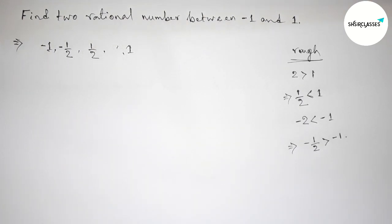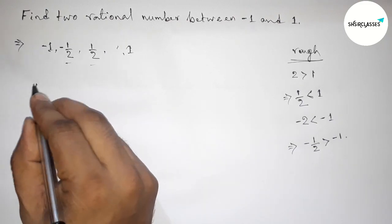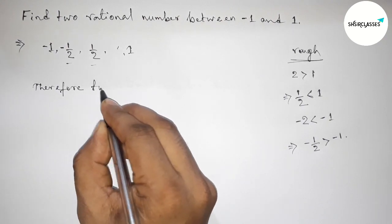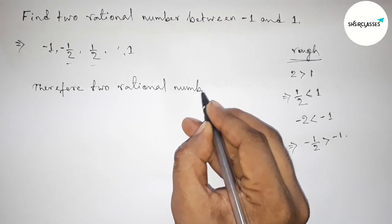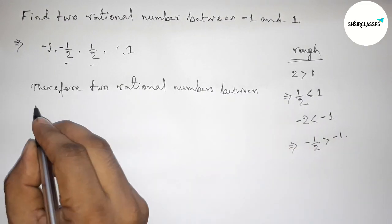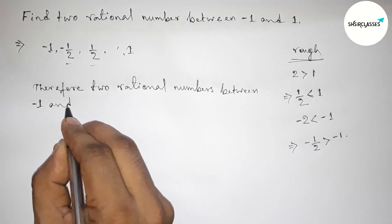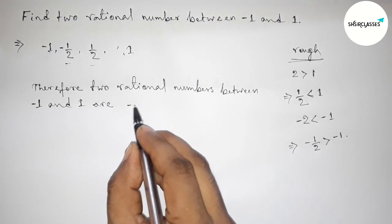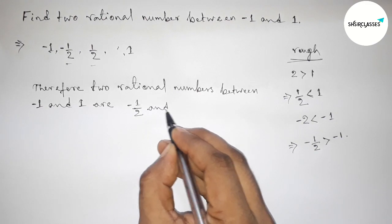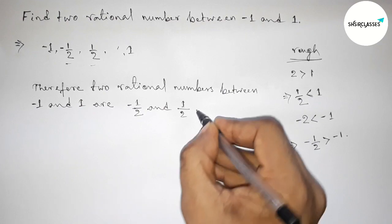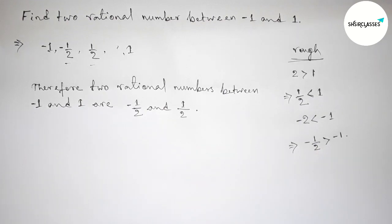So minus one by two and one by two — these are two rational numbers between minus one and one. You can find other rational numbers between minus one and one as well. Therefore, the two rational numbers between minus one and one are minus one by two and one by two. That's all — thanks for watching. If this video is helpful, please share it with your friends.